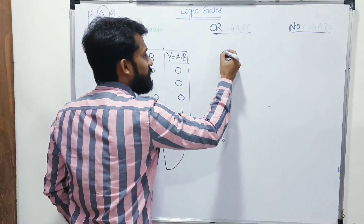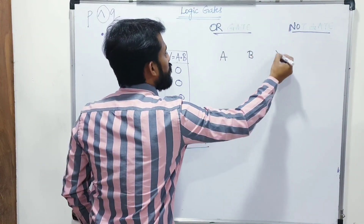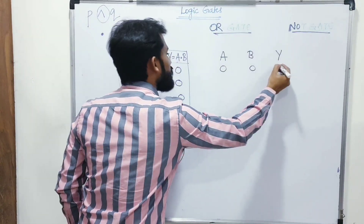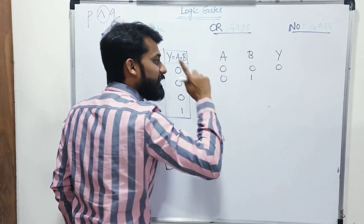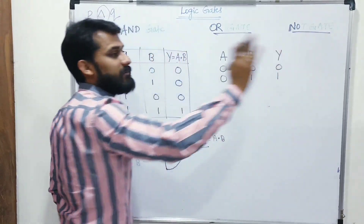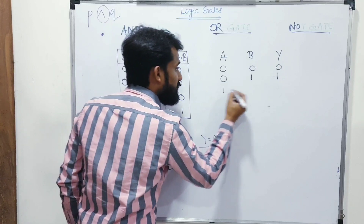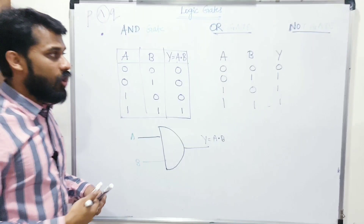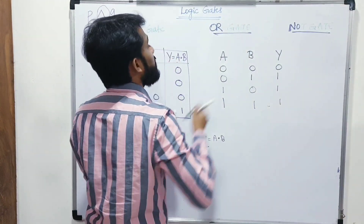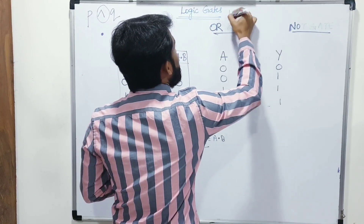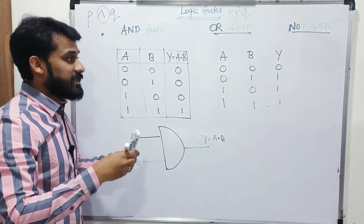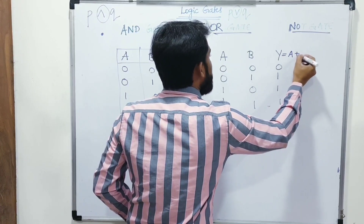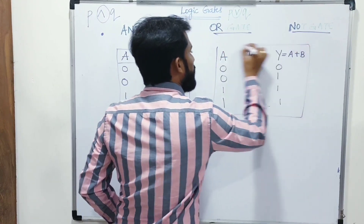OR gate: if even a single input is 1, the output will be 1. Only when both inputs are 0 is the output 0. The Boolean notation for OR is a plus sign: Y = A + B. The symbol for OR gate looks like the letter R — just take the curved part of R, with two inputs A and B giving output A + B.